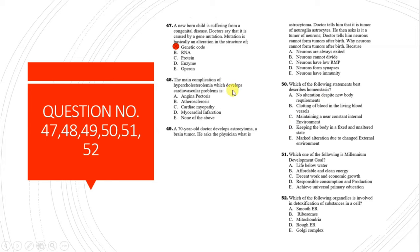Question 48: The main complication of hypercholesterolemia that develops cardiovascular problems is atherosclerosis. Due to atherosclerosis, angina pectoris, cardiac myopathy, and myocardial infarction complicate. The primary cause is atherosclerosis - hypercholesterolemia causes atherosclerosis.